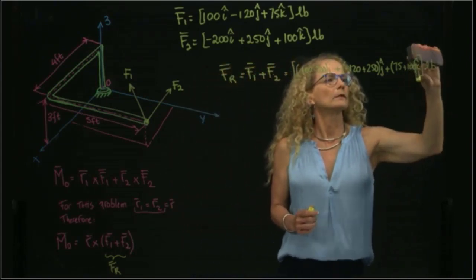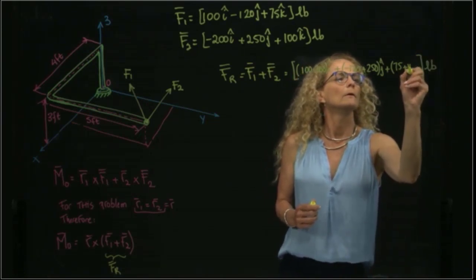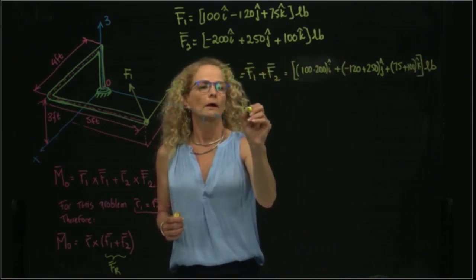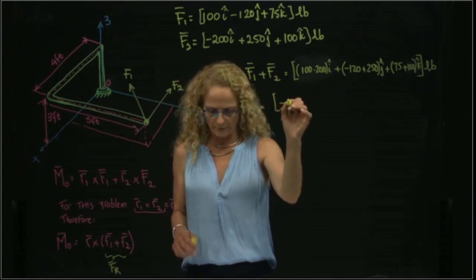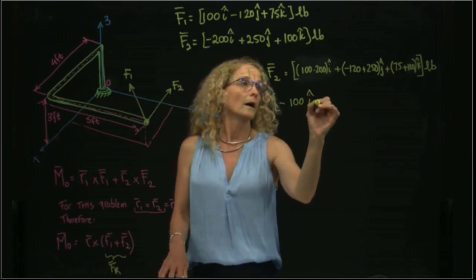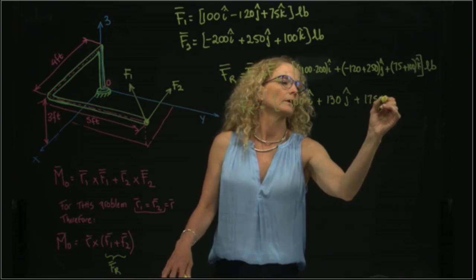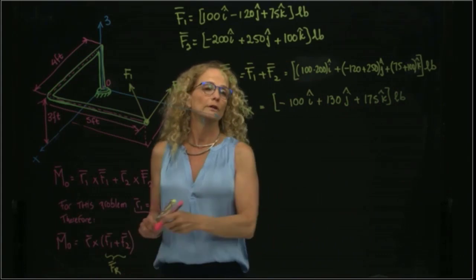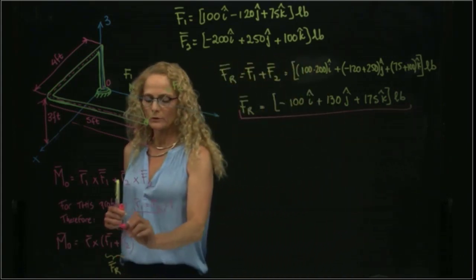Plus in K, I have 75 plus 100 in K. Therefore, I have negative 100 in I, 130 in J, and 175 in K in my brackets with units. This is my resultant force that I will use.